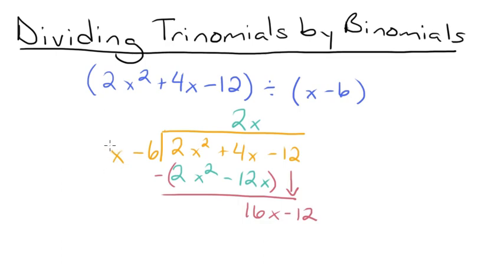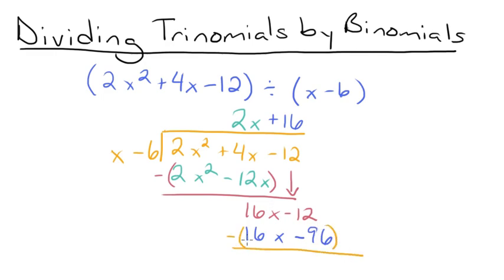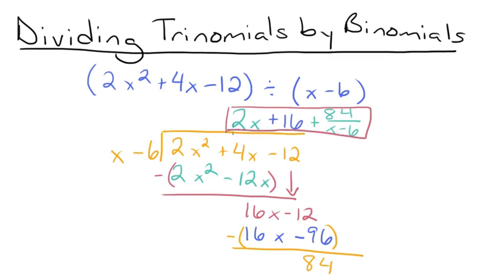Then we see how many times x goes into 16x. It goes in 16 times, because x times 16 is 16x, so we write plus 16 right here. Then we multiply 16 by x minus 6, which gives us 16x minus 96. Then we subtract: our 16x's cancel each other out, and we have negative 12 minus negative 96, so it's like negative 12 plus 96, which gives us 84. We're going to add our remainder: 84 over x minus 6. So our answer is 2x plus 16 plus 84 over x minus 6.